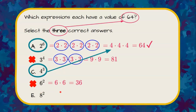Eight squared is eight times itself, two eights. Eight times eight is 64. It checks, and we have our third correct answer.